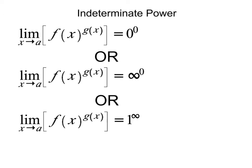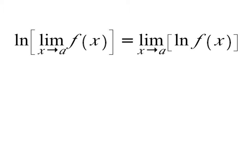Looking ahead to how we're going to deal with these types of problems, the thing that makes these difficult is just the fact that we have this exponent. It's the power that's causing it to be indeterminate. The way we're going to deal with it is the same way we did when we have x in both the base and the exponent — we're going to use the natural log. It's also useful to know that the natural log of a function's limit is the same as the limit of the natural log of that function.